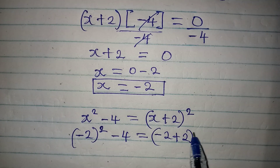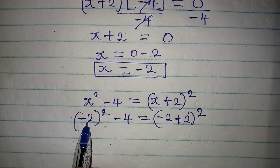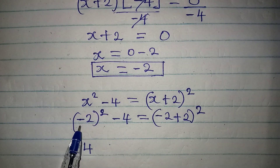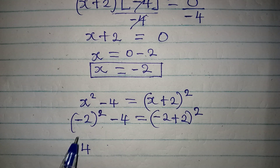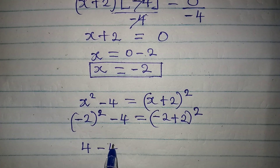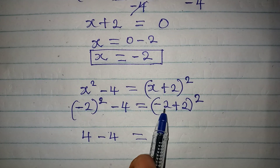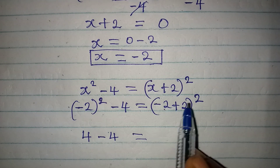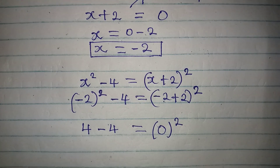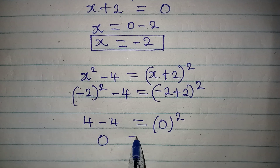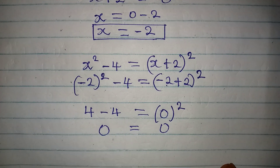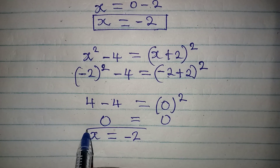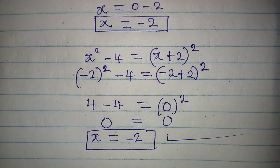Minus 2 squared gives 4, because negative times negative gives positive, and 2 times 2 is 4. Then 4 minus 4 is 0. On the right side, minus 2 plus 2 equals 0, and 0 squared is still 0. So 0 equals 0, which confirms that x equals minus 2 satisfies the given equation. Thank you for watching.